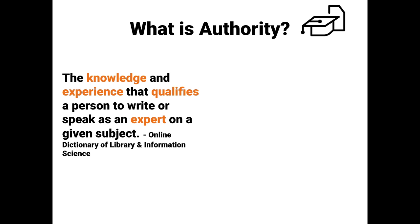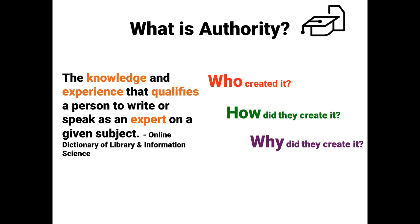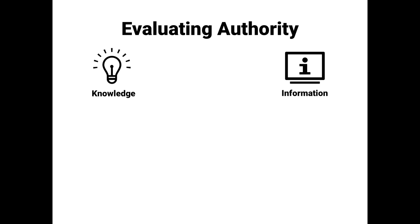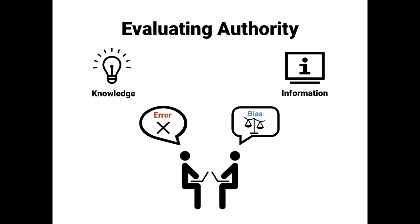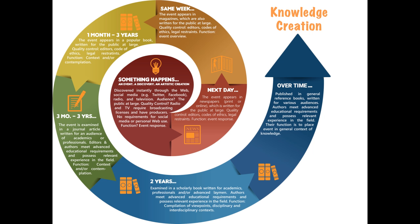Evaluating the authority of a source requires understanding who created it, how they created it, and why they created it. To evaluate authority, you should first recognize that knowledge and information are created by people like you and me, and therefore prone to error and bias. Secondly, you should recognize that information also changes and develops over time.